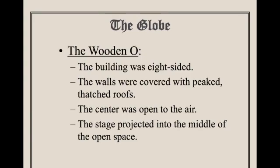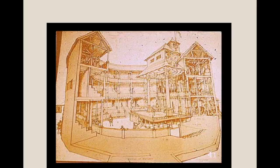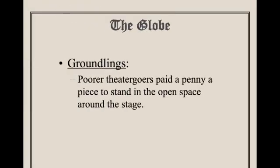The Globe is also given the nickname 'The Wooden O.' The building is technically eight-sided, and the walls were covered with peaked and thatched roofs. The center is open to the air and the stage projected into the middle of the open space, using natural light to illuminate the actors' performance. The groundlings would stand right in front of the stage — they paid just a penny a piece to stand in the open space around the stage.